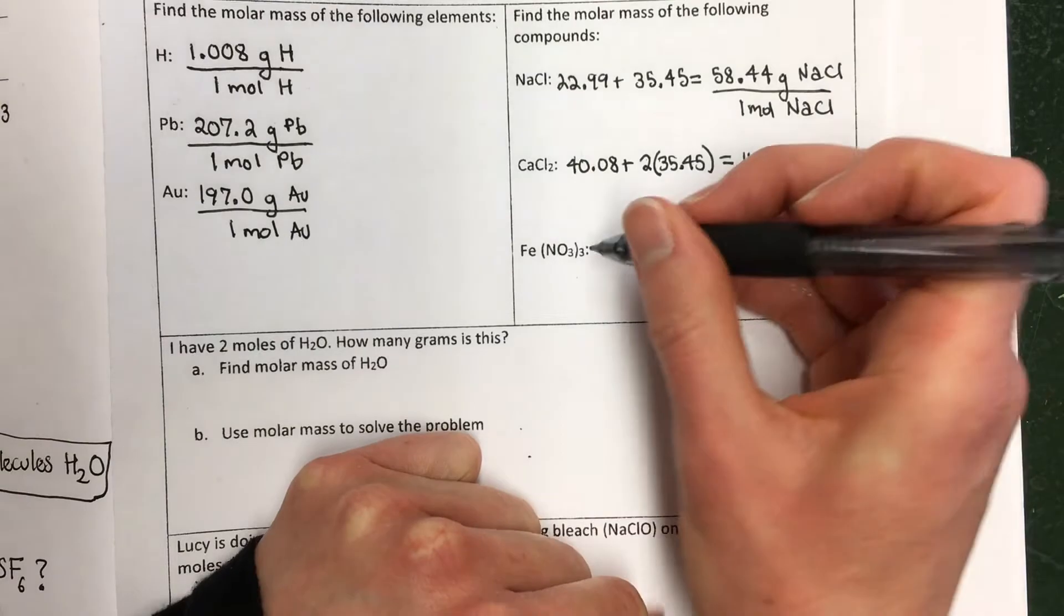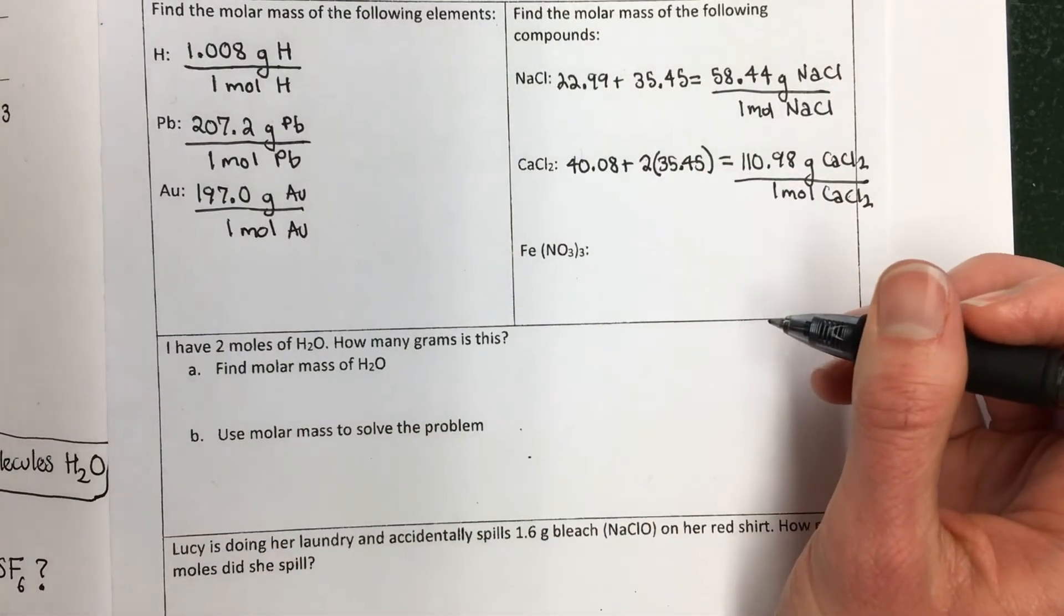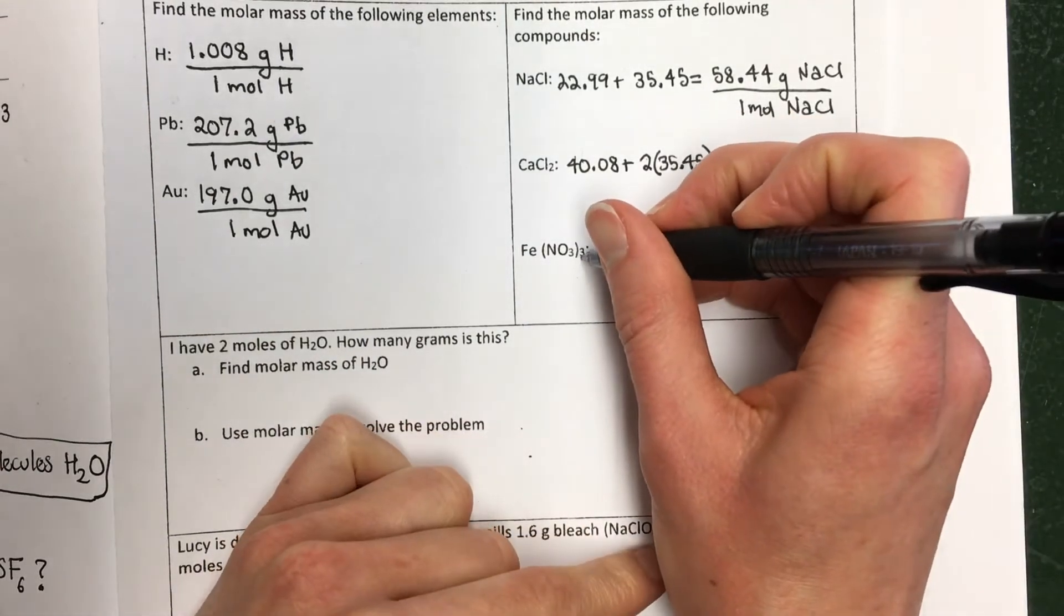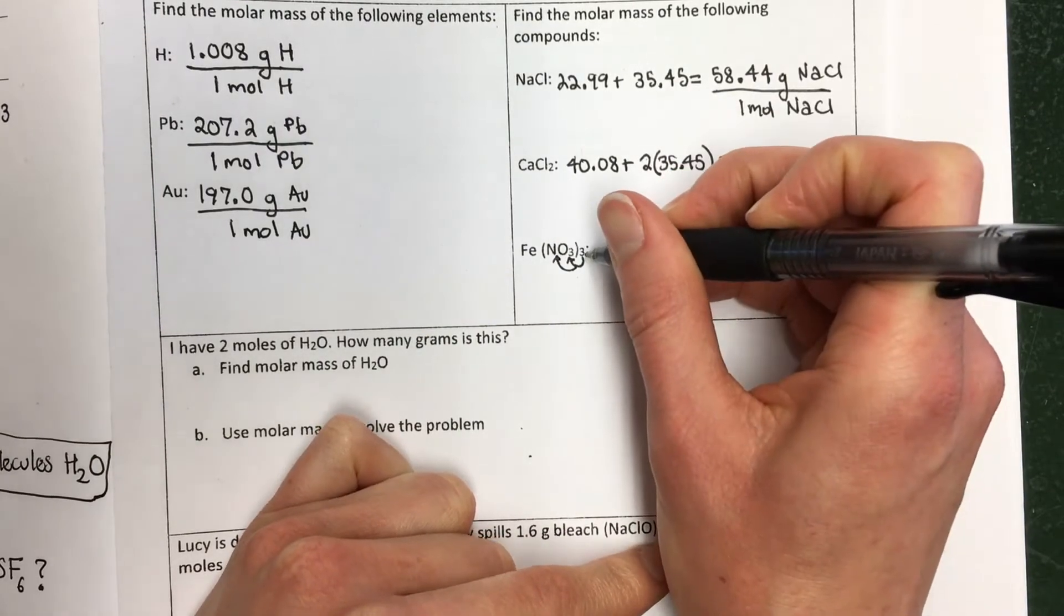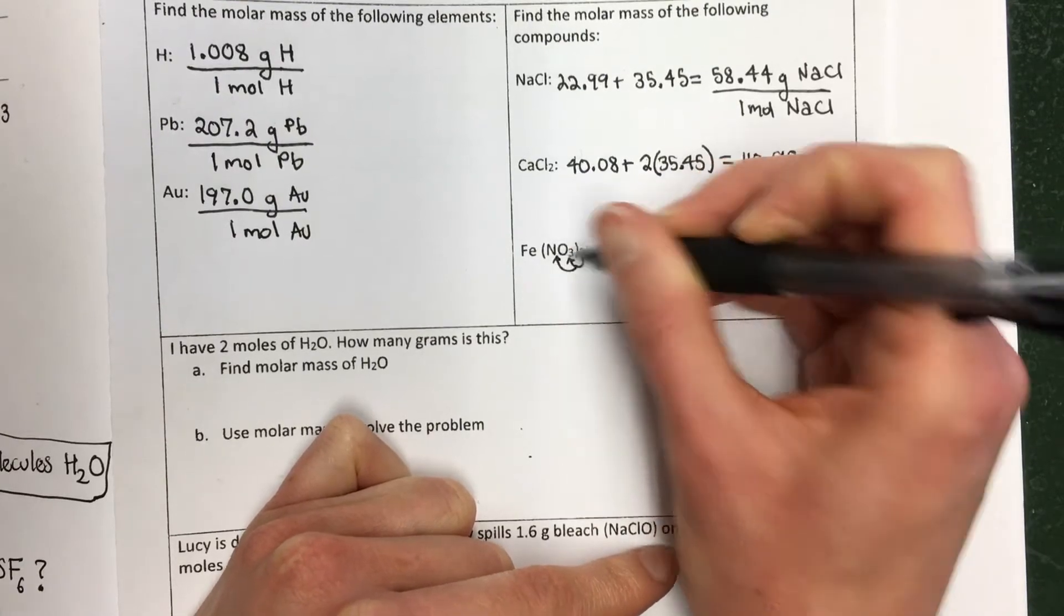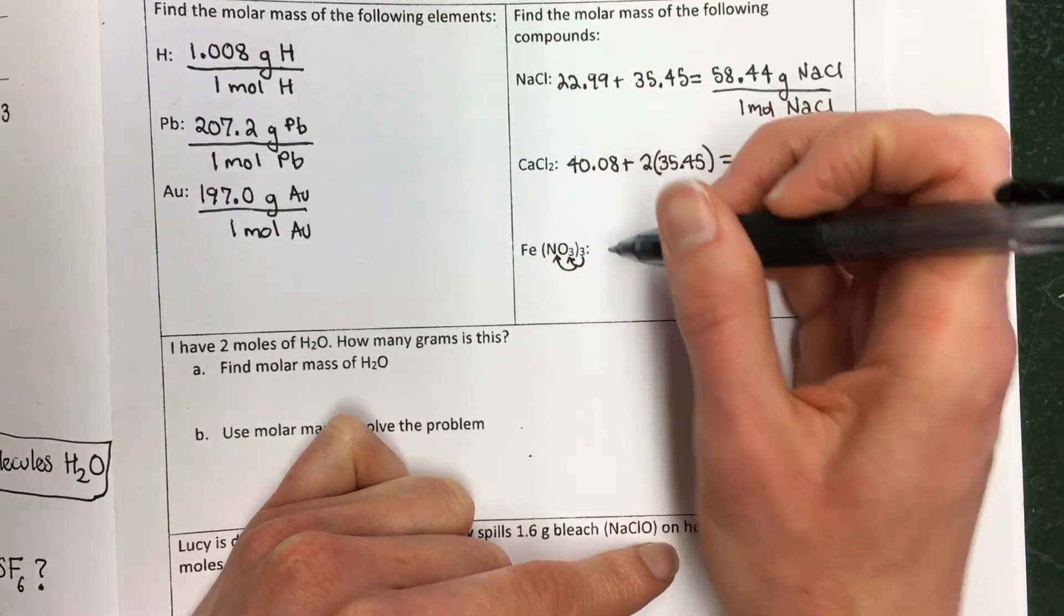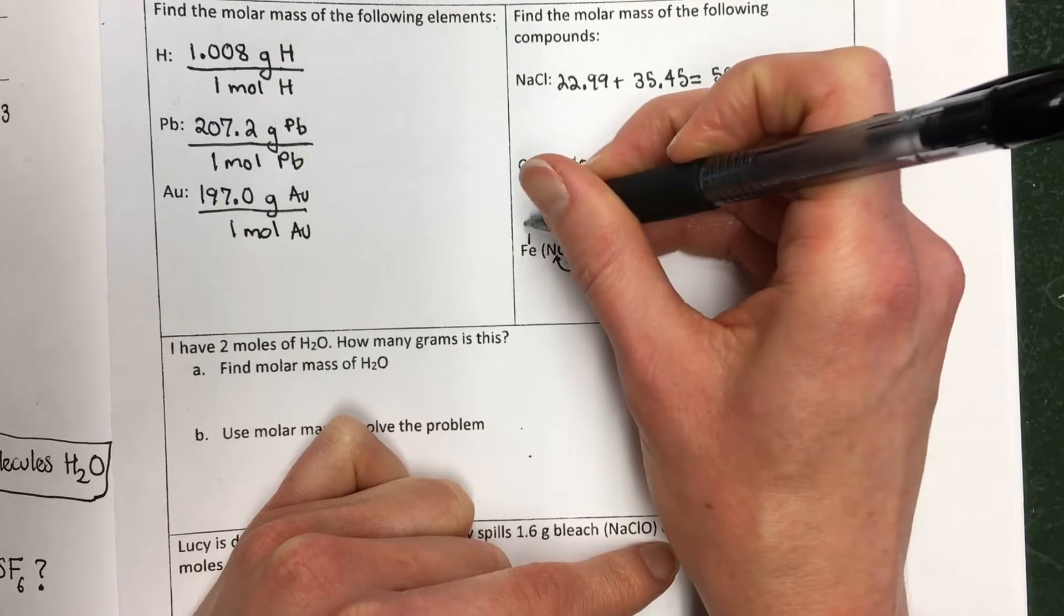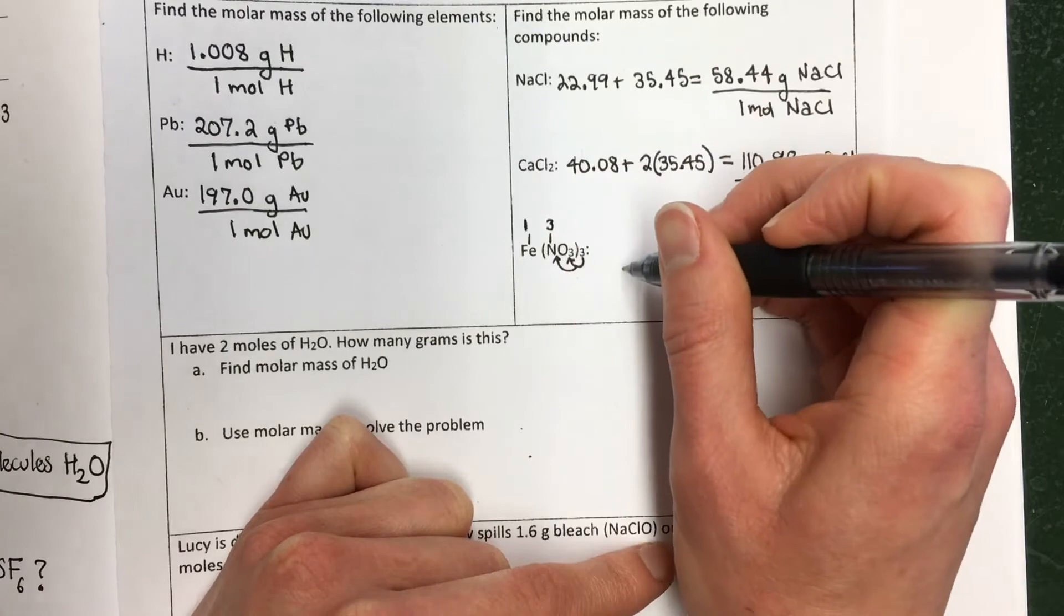This one is even more interesting. This one has parentheses with a little three outside of them. In math, if you have a number outside of parentheses, you distribute that number to everything inside the parentheses. It's the same with subscripts. So this little three subscript gets distributed to and multiplied by the subscripts inside the parentheses. So let's go through and count how many of each of these elements I have. The three doesn't affect this Fe, which is iron. So there's just one. Now the three got distributed to the N. So there's now three Ns. And then the three...